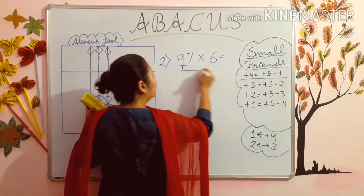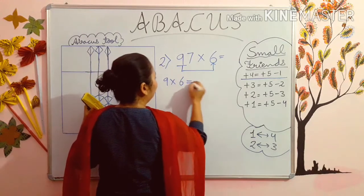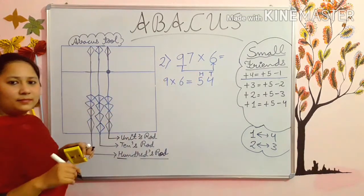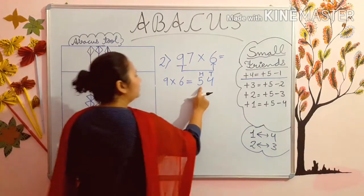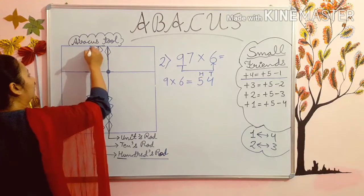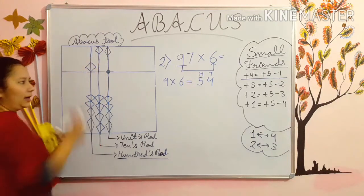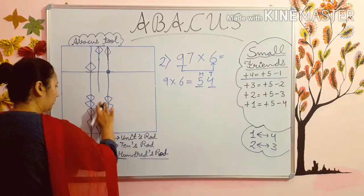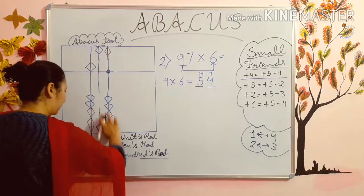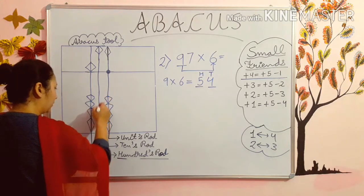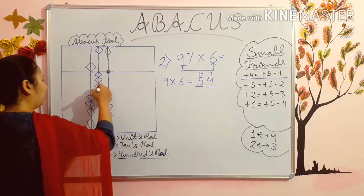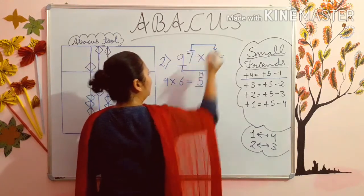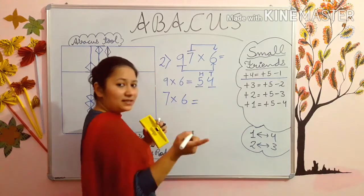First of all, multiply the first digit with 6. 9 sixes are 54. Now this in tens rod and this in hundreds rod. T for tens and H for hundreds. This in hundreds rod is 5. I have added 5. Next is 4, you have to do in tens rod. Now you have to multiply the next digit with 6. 7 sixes are 42.